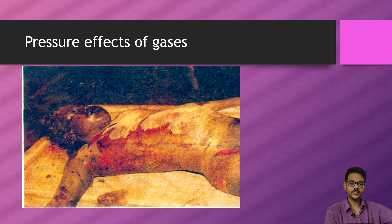This is a scene showing the rotting effect of gases — the tongue is protruded out, and bleeding may be seen from antemortem wounds present on the body.